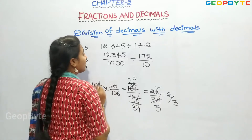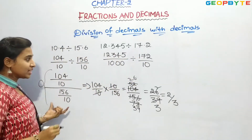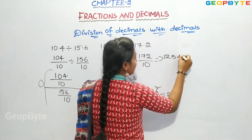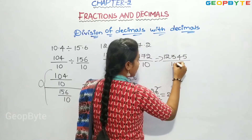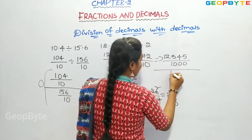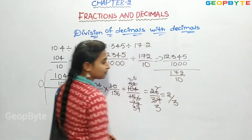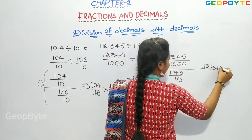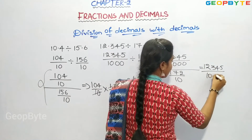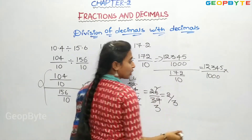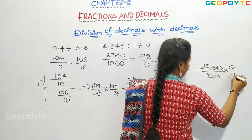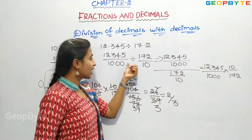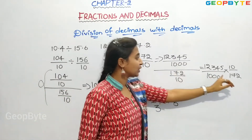Now this division will proceed similarly. That is 12345 by 1000 divided by 172 by 10. This becomes 12345 by 1000 multiplied by the reciprocal, that is 10 by 172. The sign changes from division to multiplication. Now 10 and 1000 simplify: 10 ones are 10 hundredths, giving us 12345 by 100 into 172.